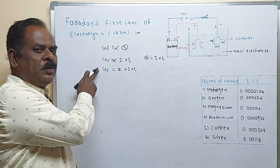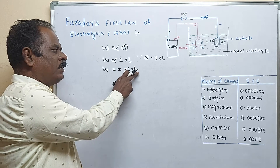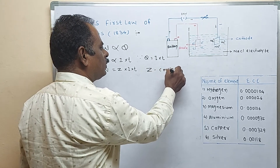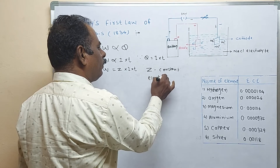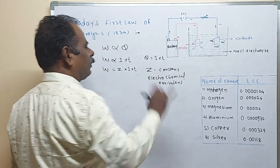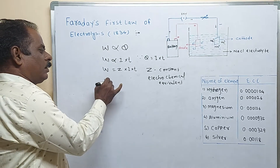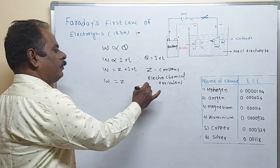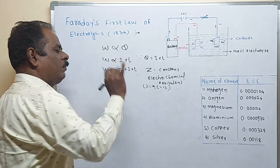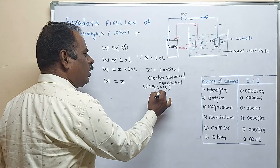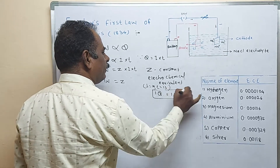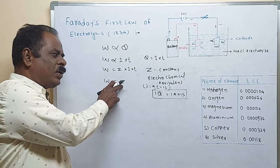W is the amount of substance deposited in grams, I is the current in ampere, and T is the time in seconds. What is Z here? Z is the proportionality constant, also called the electrochemical equivalent. Consider I = 1 ampere and T = 1 second, meaning one ampere of current is passed in one second — that is one Coulomb of electricity. The substance deposited under these conditions is called the electrochemical equivalent.